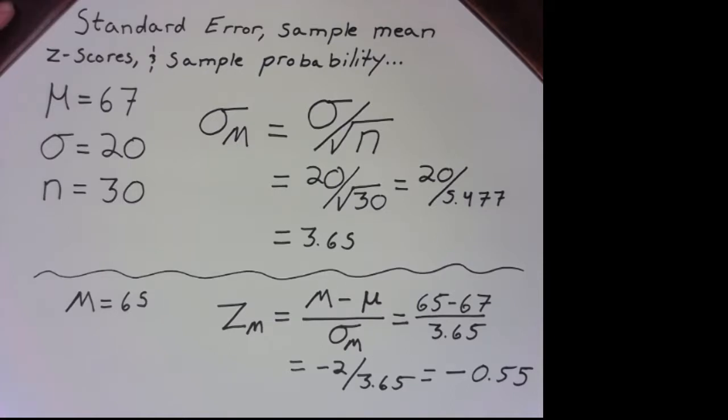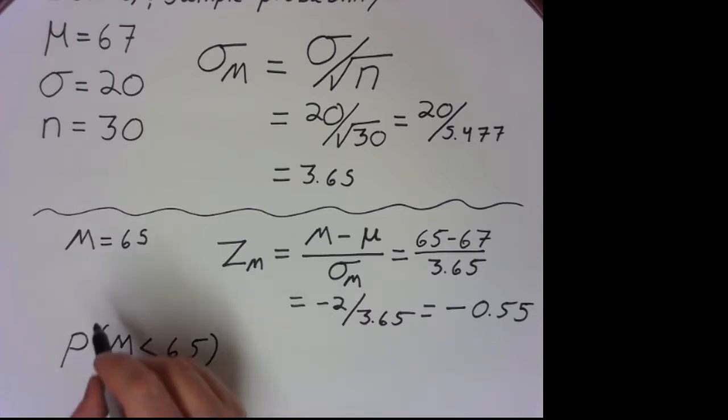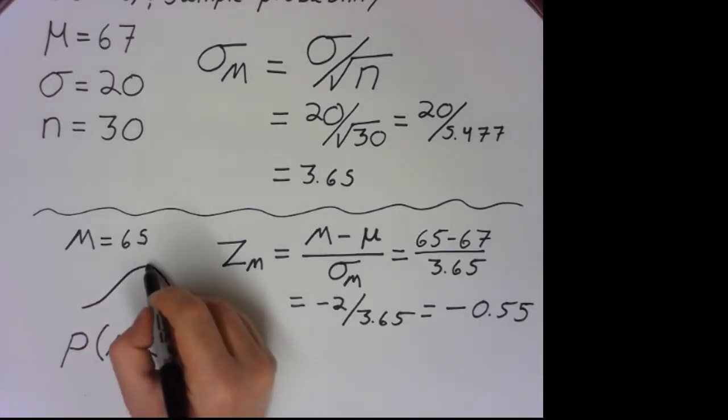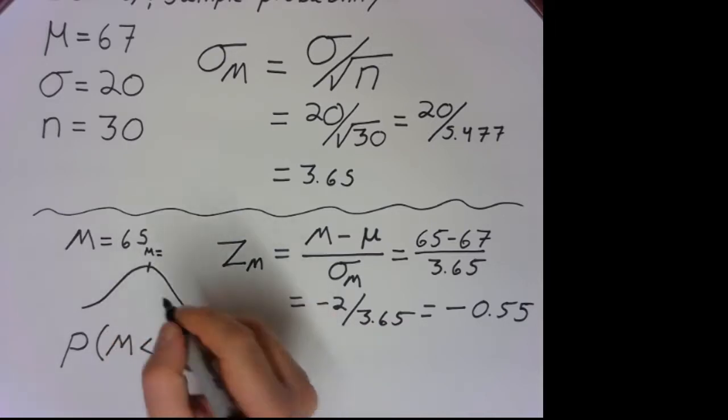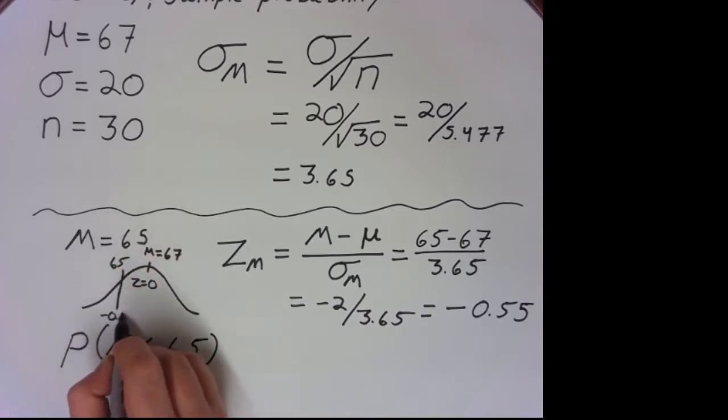So now let's say we want to know the probability of getting a sample with a mean less than 65. We have to sketch out our distribution. We know the population mean is 67 with a z-score of 0, and 65 is our sample mean. We already calculated the z-score at negative 0.55, and we want the area less than that, so the tail that I shaded in there.